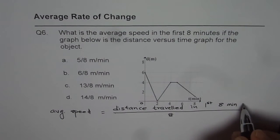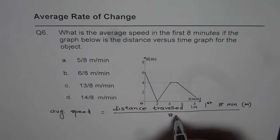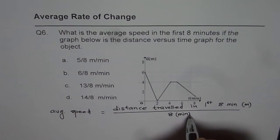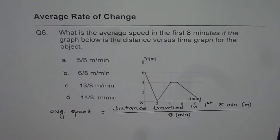So this distance of course will be in meters divided by eight minutes. That is what our average speed is going to be.